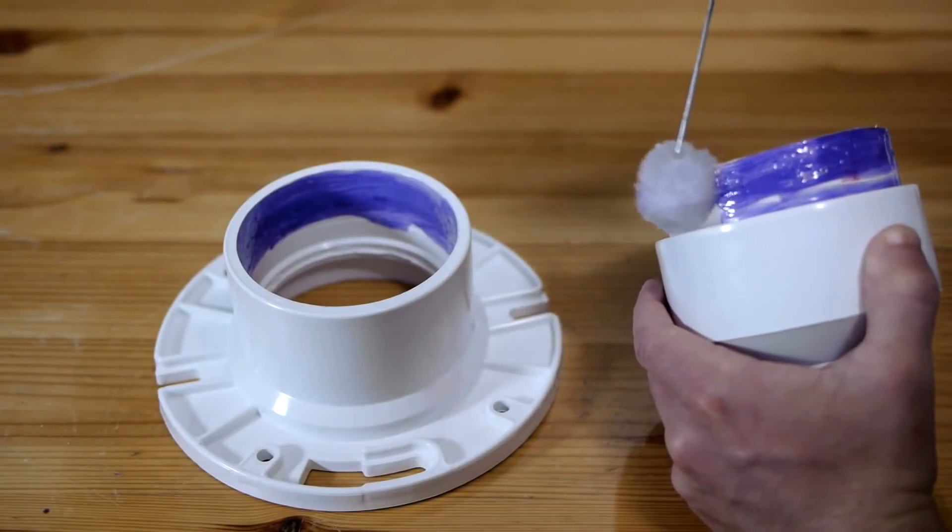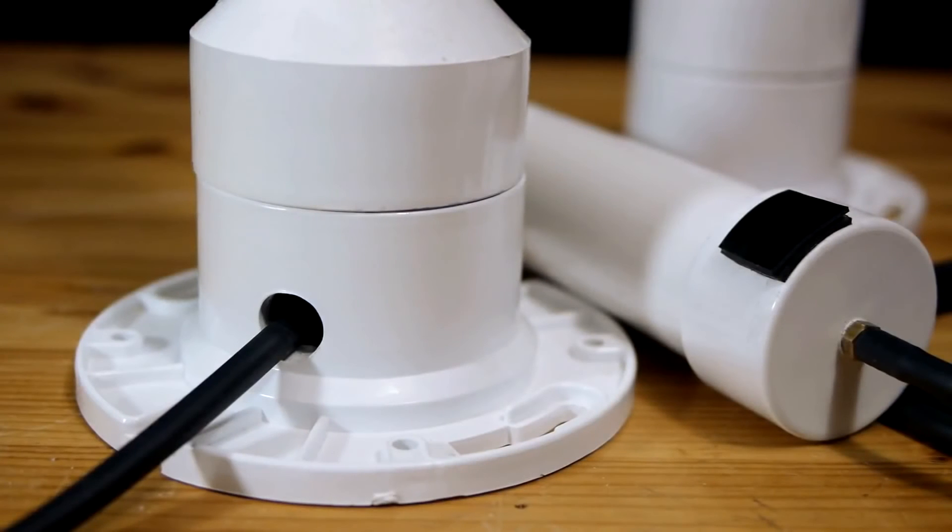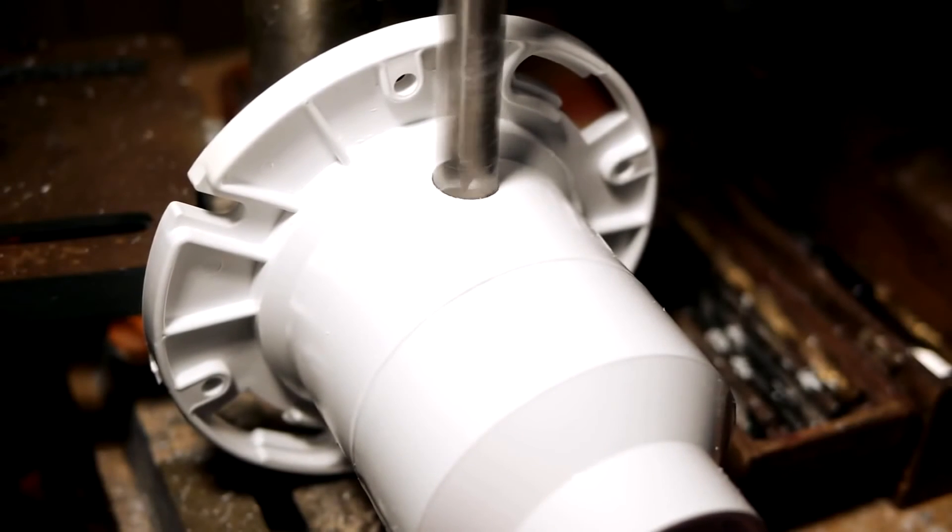With another swab of primer and cement, the adapter can be glued into the closet flange. The base now only needs to have a hole drilled just above the flat portion to allow the vacuum line to pass through.